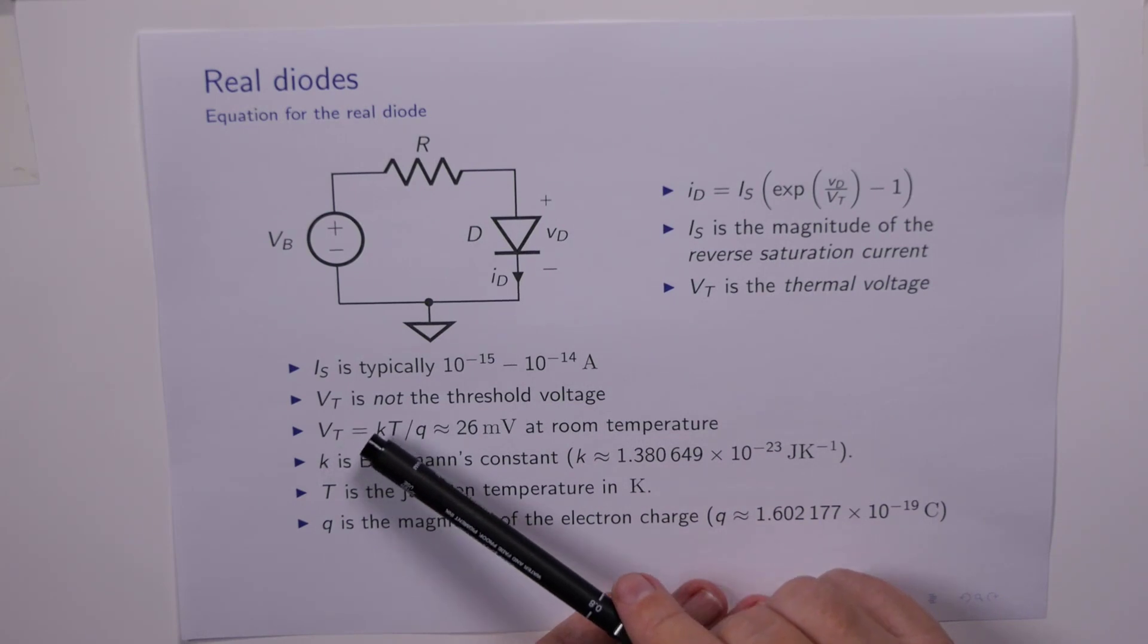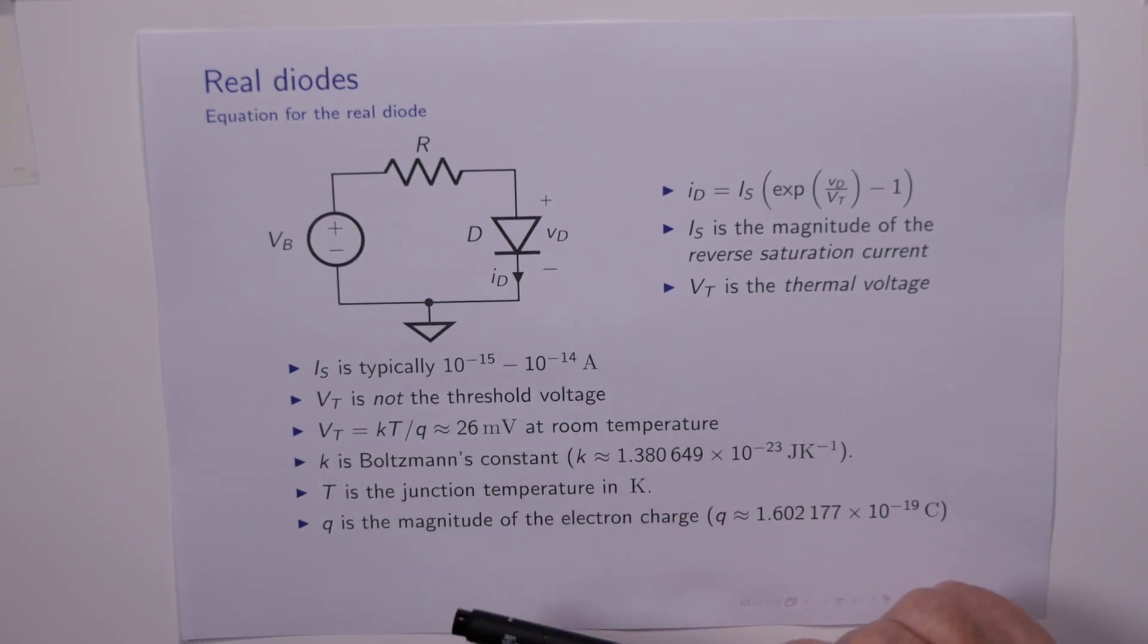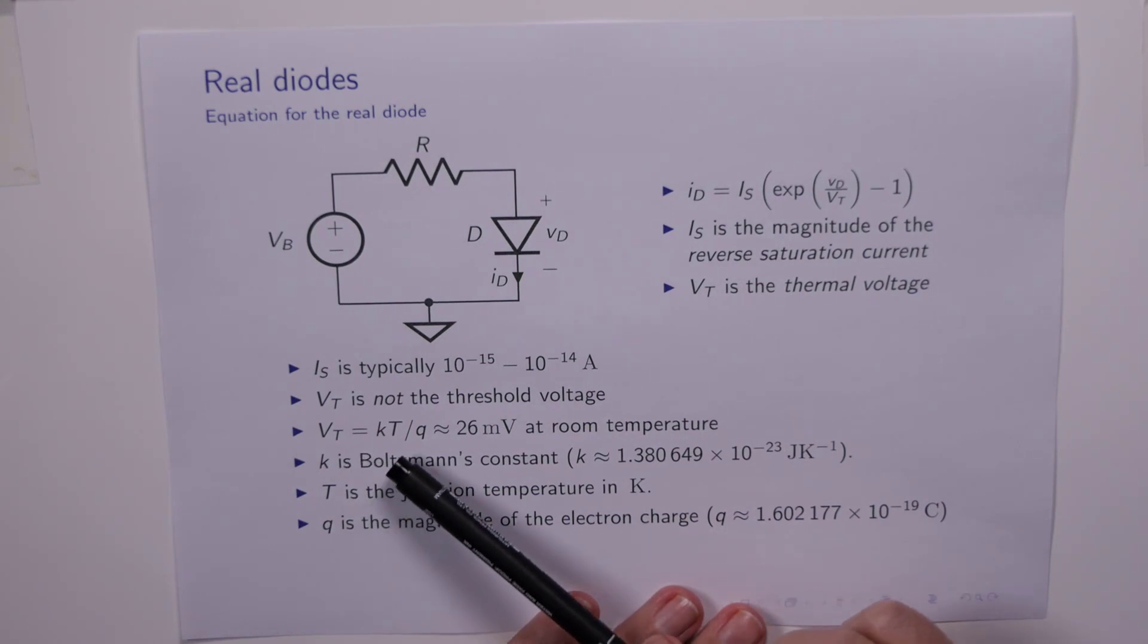Vt, the thermal voltage, is not the threshold voltage that we've talked about. Instead, it's a voltage which comes about through combination of various constants at the PN junction. K is Boltzmann's constant. T is the temperature in Kelvin. Q is the magnitude of the electron charge. And it works out that this combination is about 26 millivolts at room temperature.